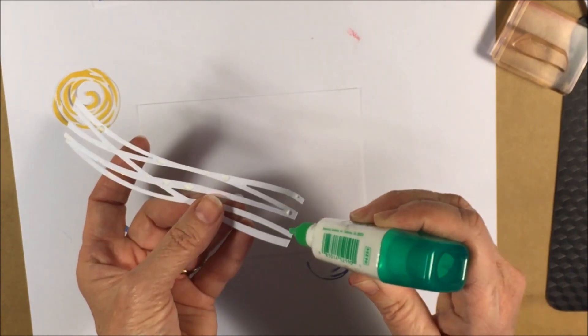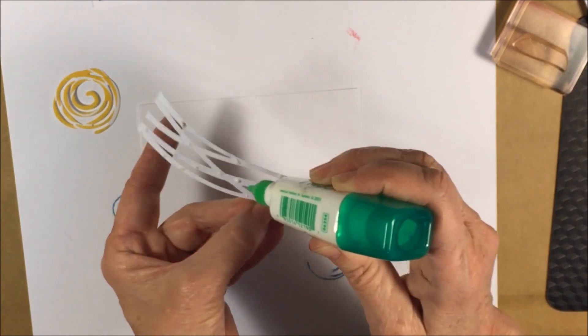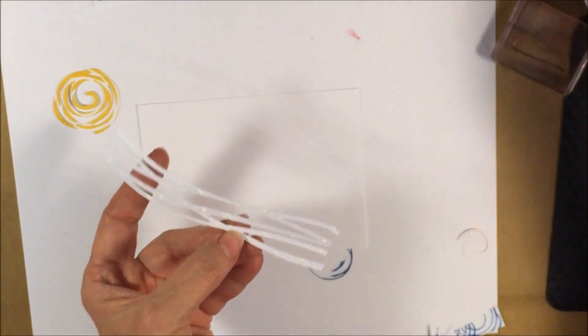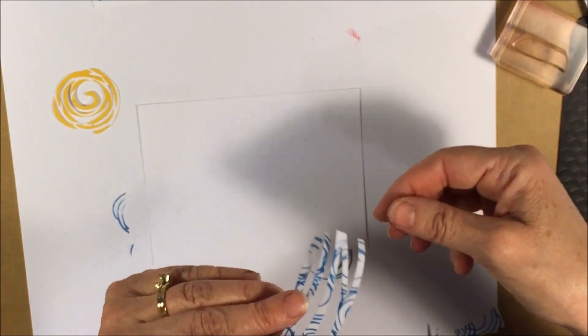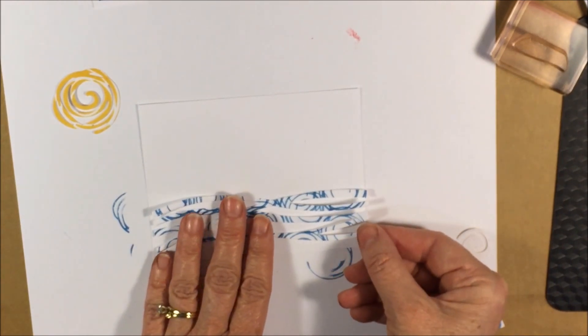Make sure you get it at the edges. That's an important spot. That looks pretty good. Kind of smear it a little bit. Okay, I'm going to flip that over and attach it to our card base.